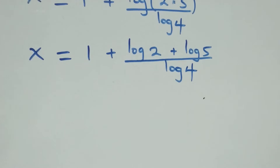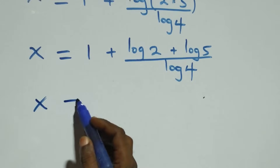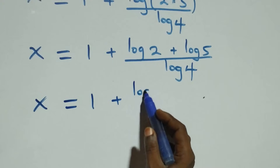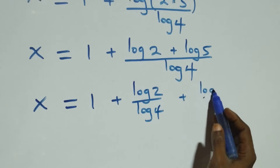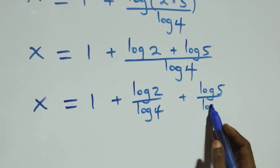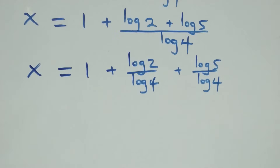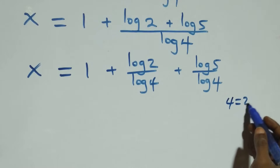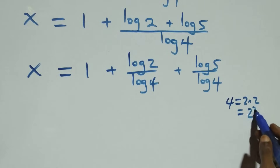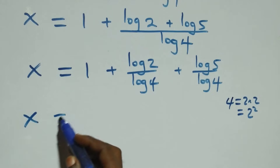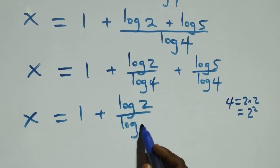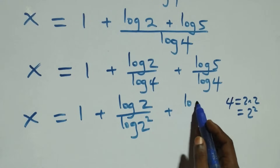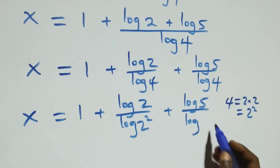We separate this into two fractions: x equals 1 plus log 2 over log 4 plus log 5 over log 4. From here we can express 4 as 2 times 2, which is the same as 2 squared. So x equals 1 plus log 2 over log 2 squared, plus log 5 over log 2 squared.